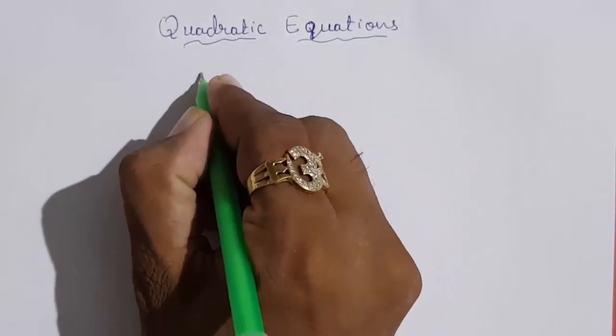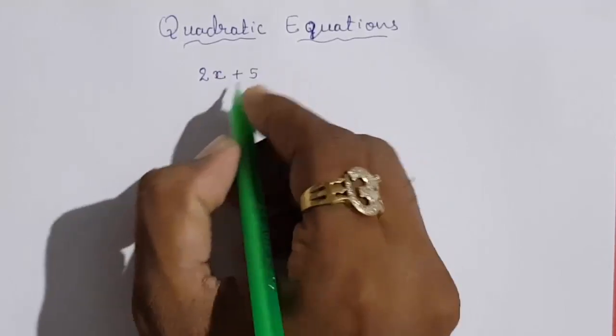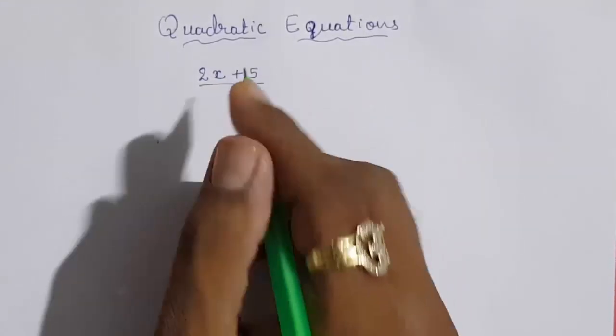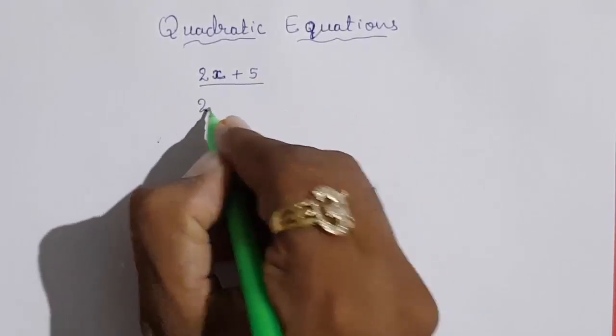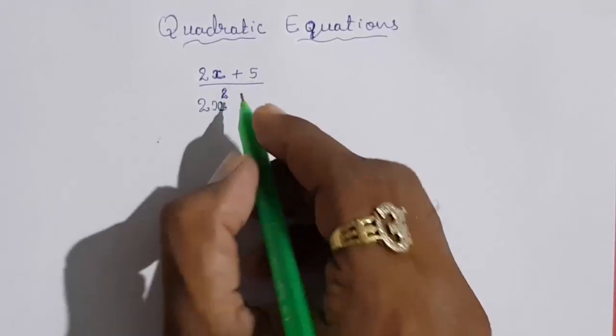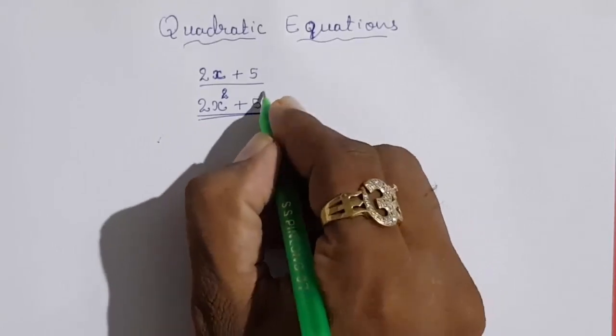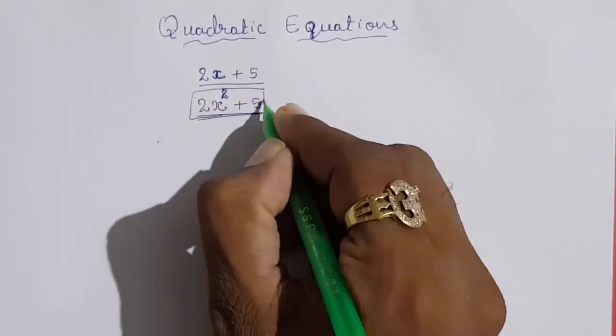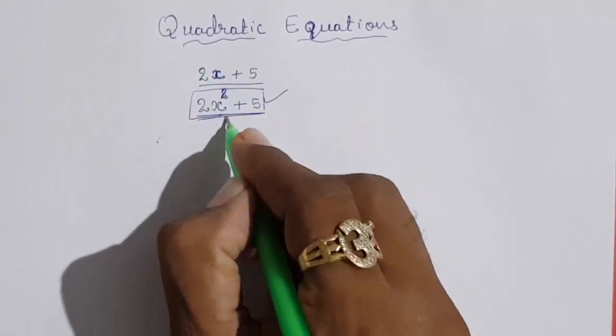If you are writing any polynomial 2x plus 5, this is a polynomial with variable x. Whenever any polynomial is having highest power 2 or you can say degree 2, 2x² plus 5, then this polynomial is called quadratic polynomial. So this is quadratic polynomial.